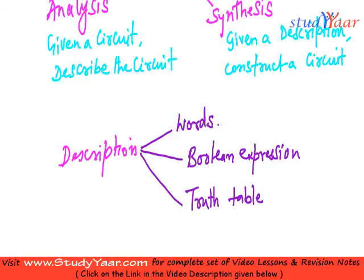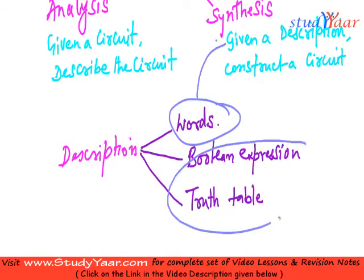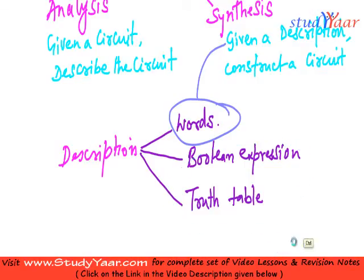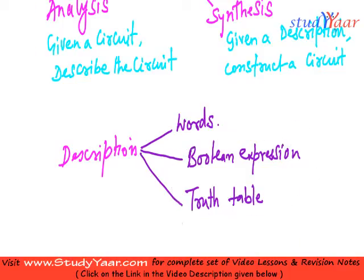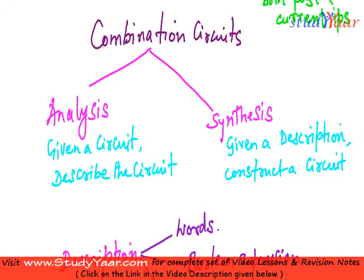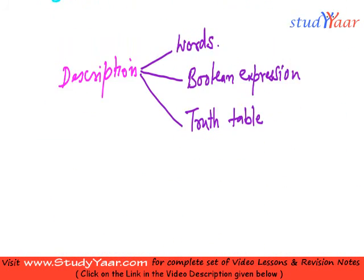In synthesis, you would be given a verbal description or a description in words, and you have to find the circuit diagram. In analysis, your circuit diagram would be given, and you have to find the Boolean expression and truth table. We are going to look basically into synthesis of combinational circuits.